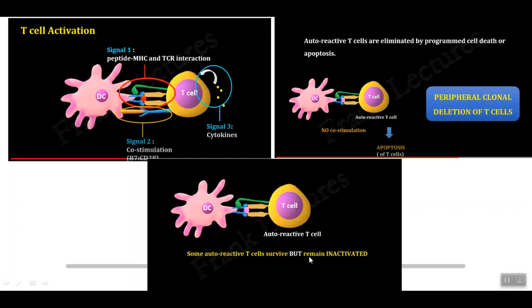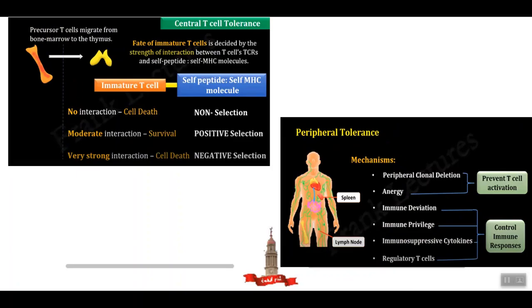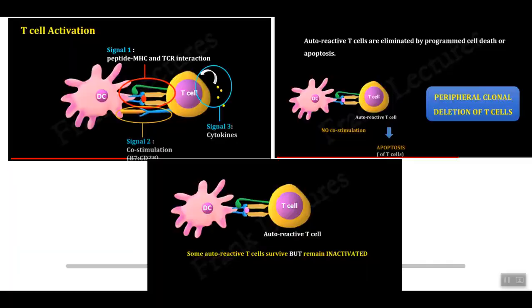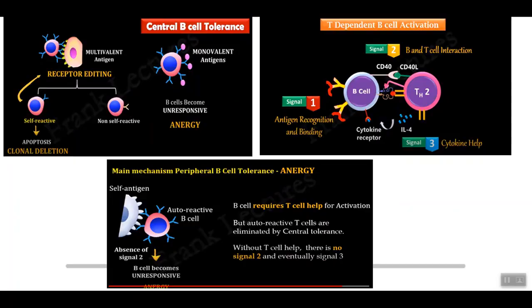Some auto-reactive T cells can survive but remain inactivated — this is called anergy. Anergy means the auto-reactive T cell avoids apoptosis but remains inactivated. Peripheral clonal deletion and anergy are both mechanisms of peripheral tolerance for T lymphocytes.